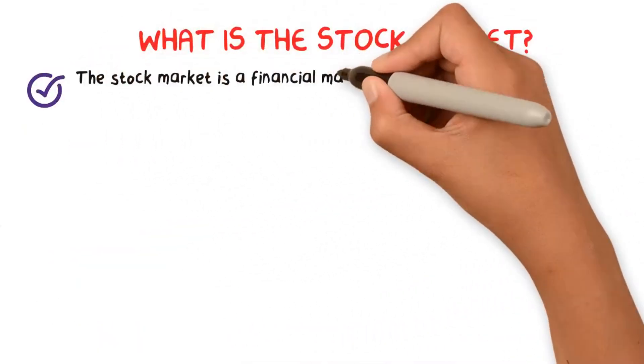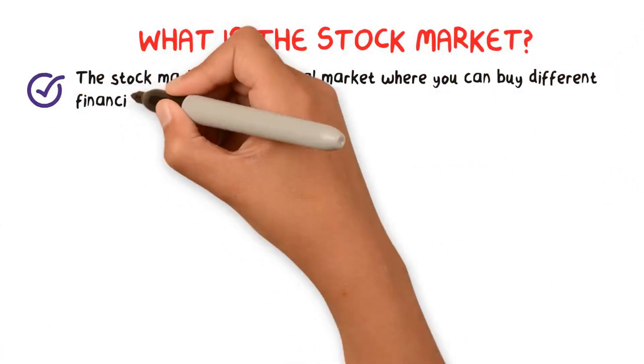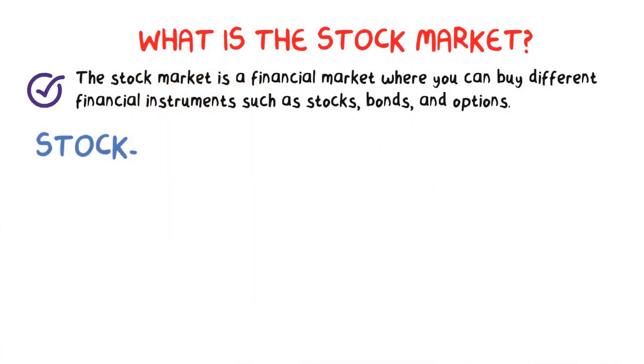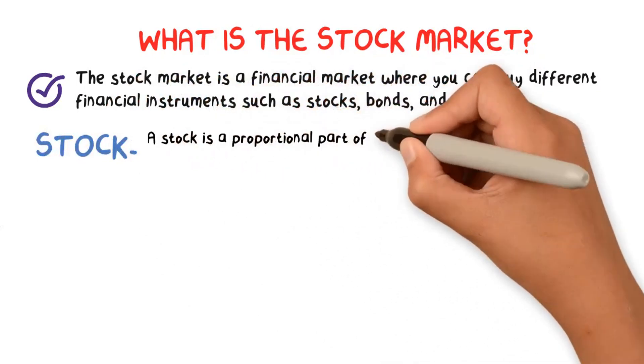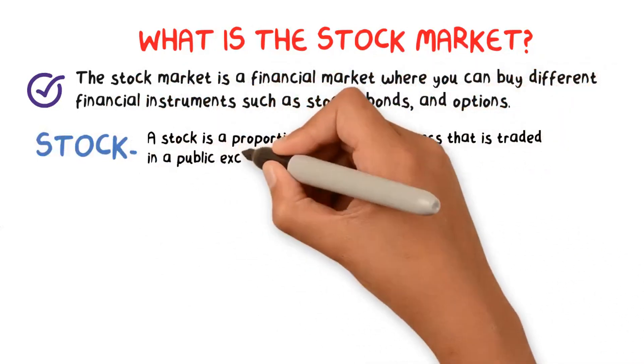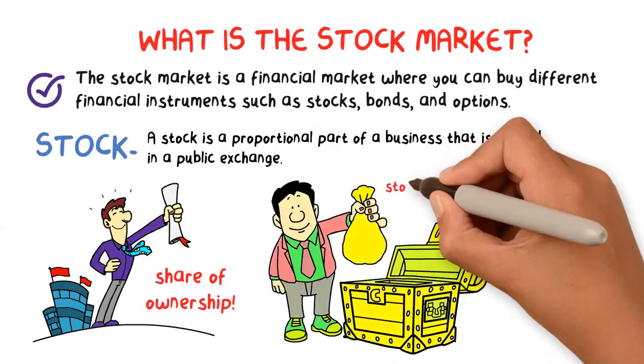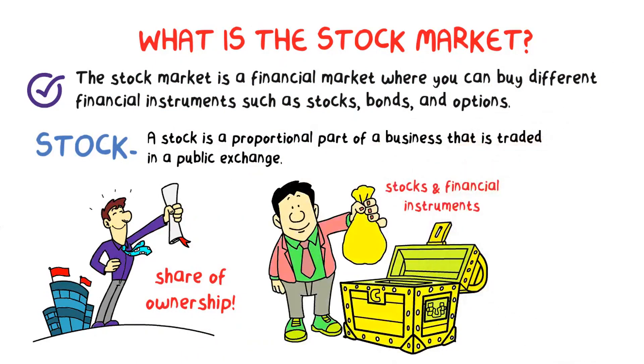What is the stock market? The stock market is a financial market where you can buy different financial instruments such as stocks, bonds, and options. So what is a stock? A stock is a proportional part of a business that is traded in a public exchange. It represents a share of ownership in a company. So investors buy stock and other financial instruments to build a diverse portfolio that helps increase their capital and mitigate risk.